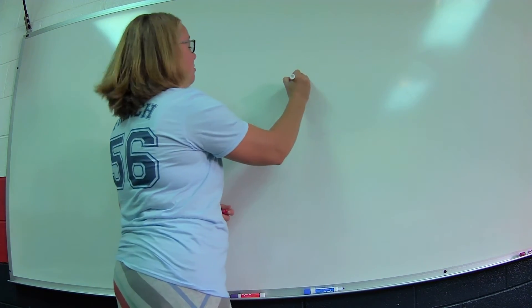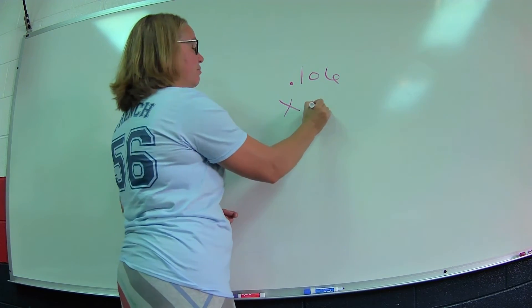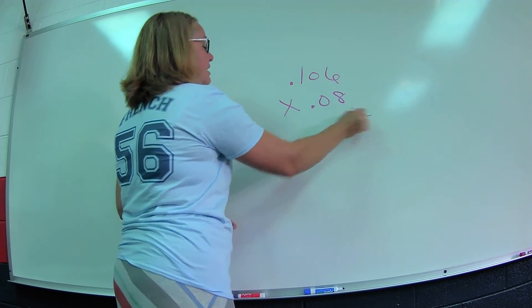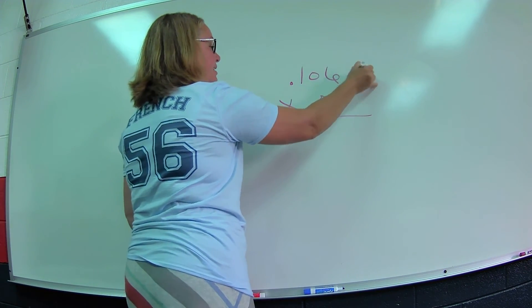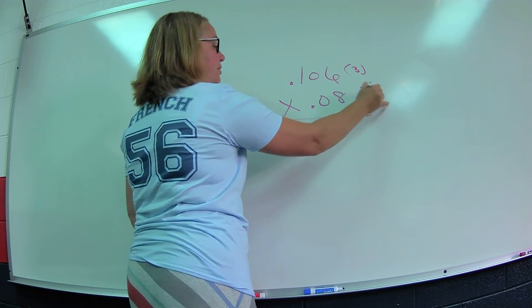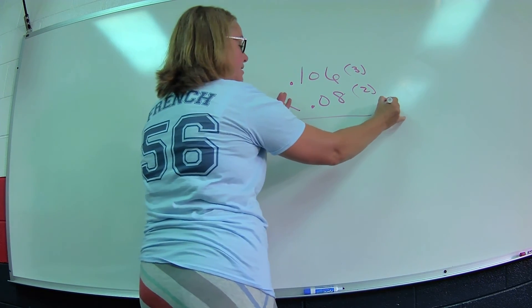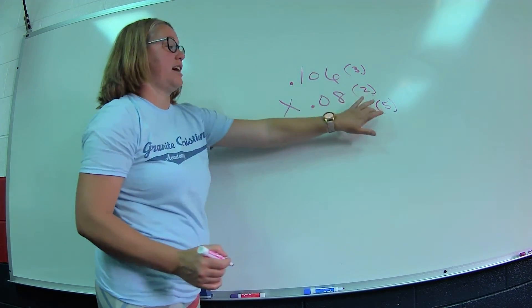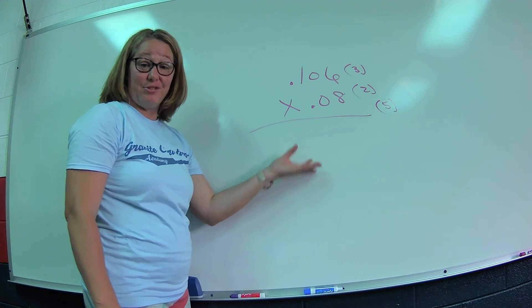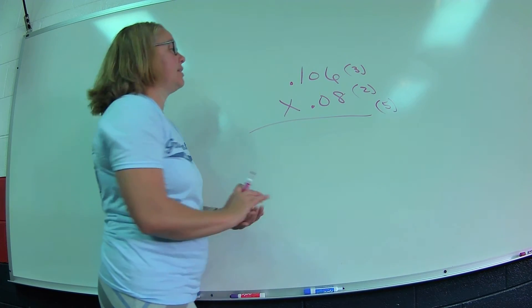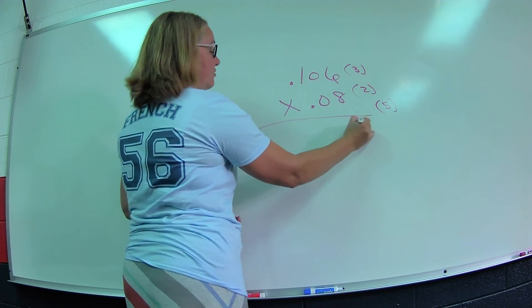Again, let's do a couple more. 0.106 times 0.08. Let's count our decimal places. One, two, three, and one, two. So now we're going to go out five decimal places. It's always important to kind of do that. It makes your math visual and helps you not to forget to put the decimal in your answer or in your product.